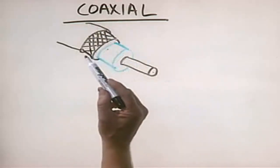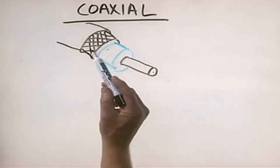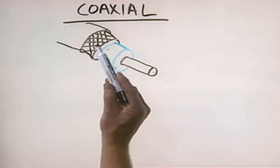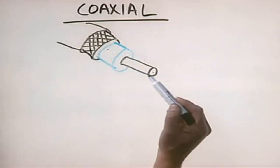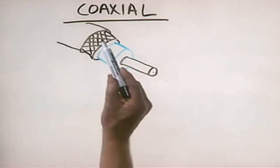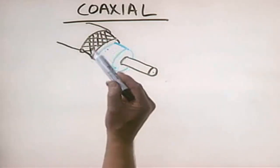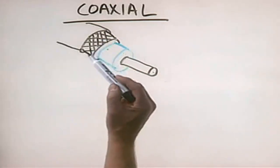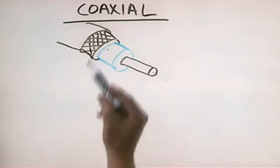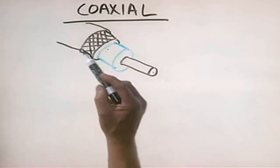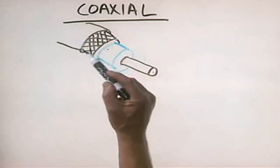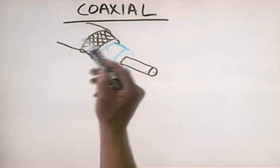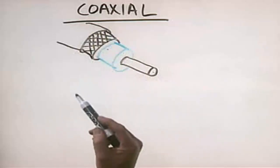The second conductor is usually an aluminum or copper mesh. This central conductor is usually used for transmitting signals, while this outer conductor is usually used for grounding. Then surrounding this second conductor is a plastic PVC sheath, usually black in color, just like your cable TV line.